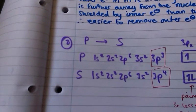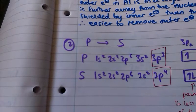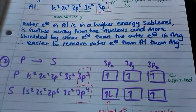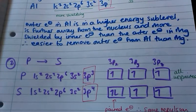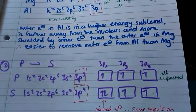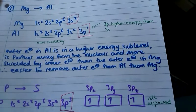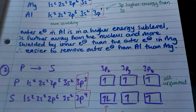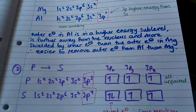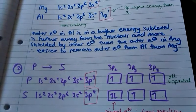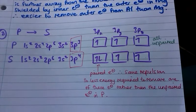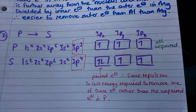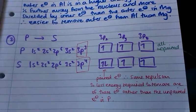For phosphorus to sulphur, the outer electrons in both are in the 3p sublevel. Writing out how the p orbitals are filled, in phosphorus all electrons are unpaired, whereas in sulphur there is one pair of electrons and two unpaired electrons. The first ionization energy for sulphur is lower than for phosphorus because the paired electrons experience repulsion between them, so less energy is needed to remove one of these paired electrons than to remove one of the unpaired electrons in phosphorus.